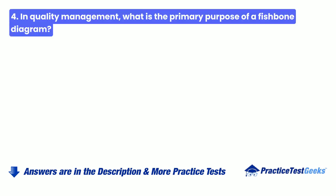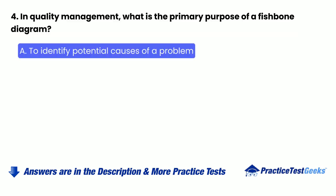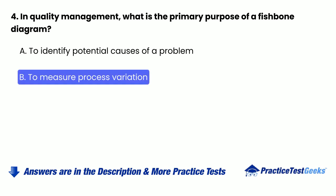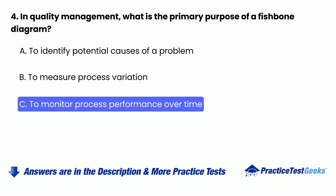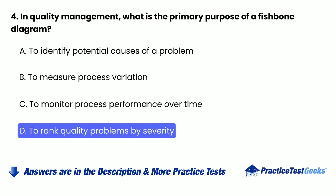4. In quality management, what is the primary purpose of a fishbone diagram? a. To identify potential causes of a problem. b. To measure process variation. c. To monitor process performance over time. d. To rank quality problems by severity.